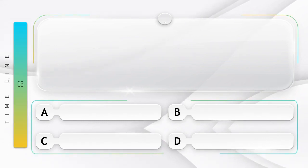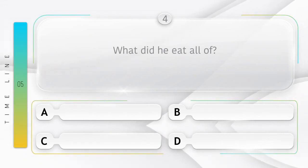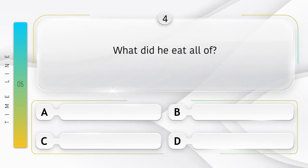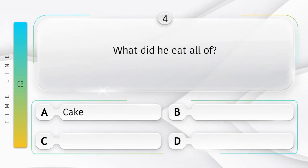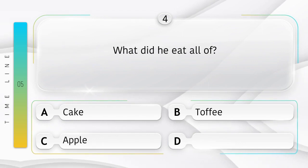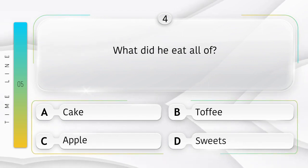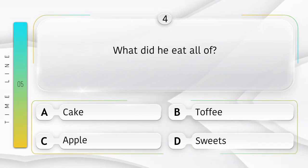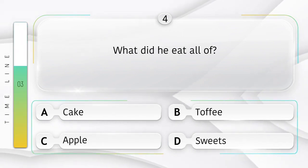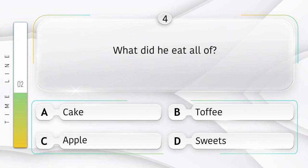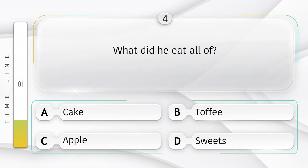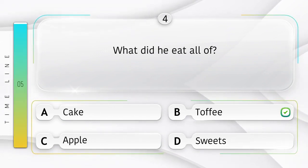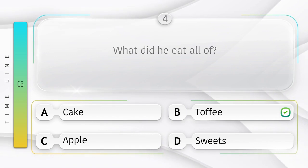Toys. What did he eat all of? Usne sab kya khaya? Option is A. Cake. B. Toffee. C. Apple. D. Sweets. Answer is option B.